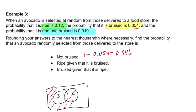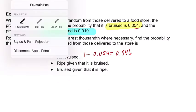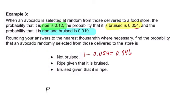The next one says ripe given that it is bruised. So ripe given that it's bruised. Let's go back to some of our definitions here. The probability that it's ripe given that it's bruised equals the probability of ripe and bruised over the probability of it being bruised.